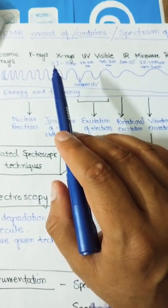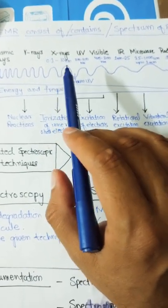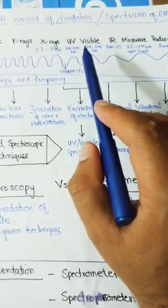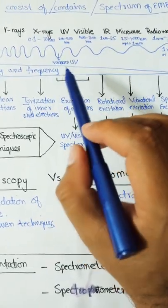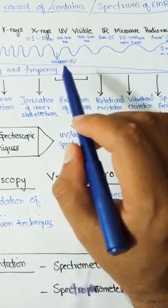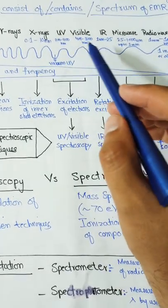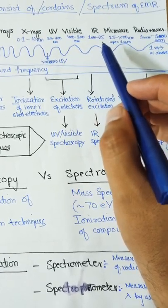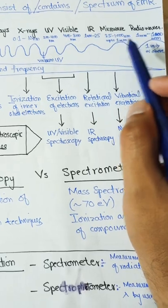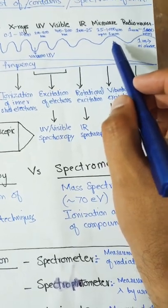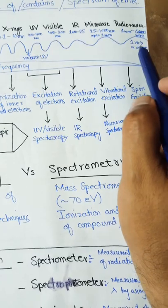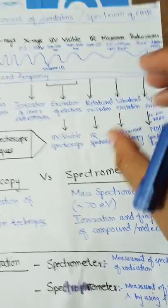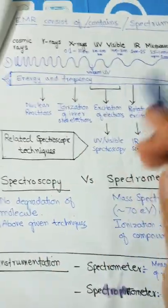Specifically: x-rays have a wavelength of 0.1 to 10 nanometers; the vacuum UV range is from 50 to 200 nanometers; UV range is 200 to 400 nanometers; visible range is 400 to 800 nanometers; infrared is 1 to 25 micrometers; microwaves are 25 to 1000 micrometers; radio waves are from 1 millimeter to 1 meter or above; and radar waves have even longer wavelengths.